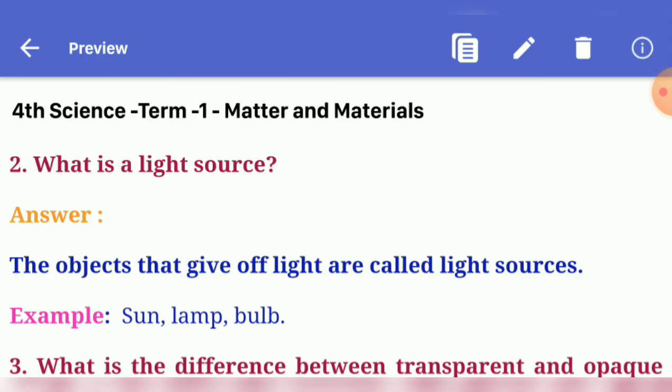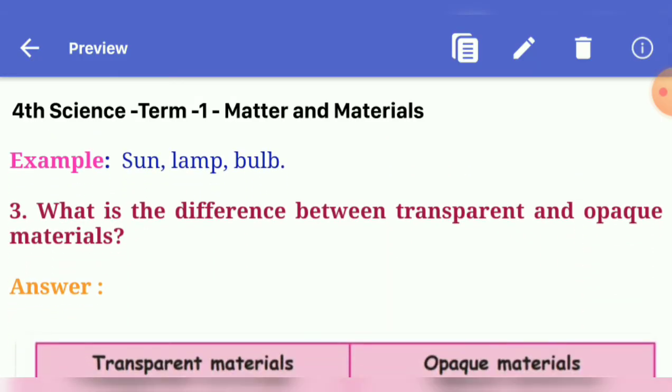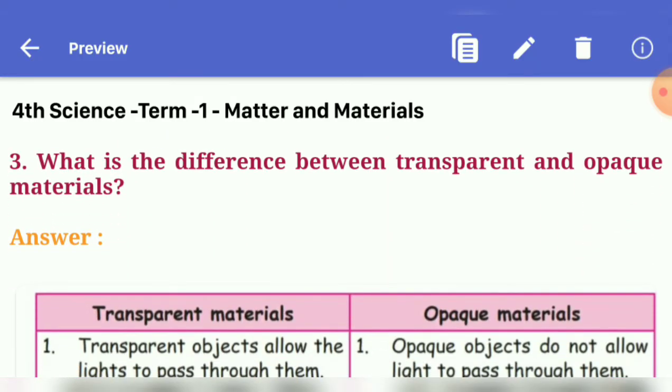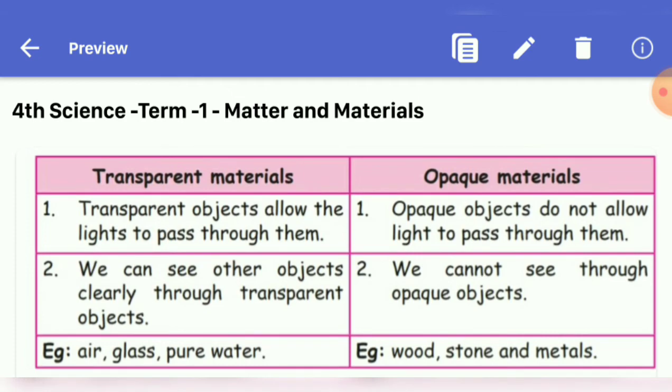Example: sun, lamp, bulb. Next, third question: what is the difference between transparent and opaque materials? Answer. Transparent materials, opaque materials, first point.